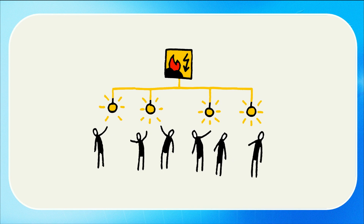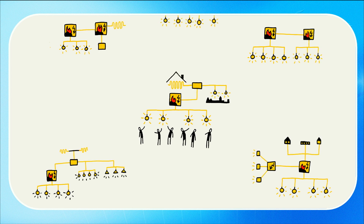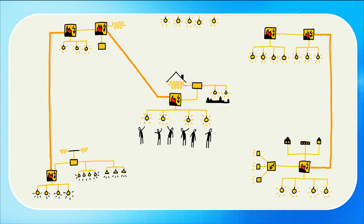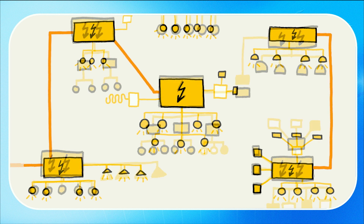Let us take the example of the electricity infrastructure. The first true electricity infrastructure came online in 1882. It consisted of a single coal-fired generator, providing power to the light bulbs of 59 customers within a New York neighborhood. Soon, similar systems sprouted in major cities around the world. Eventually, these local neighborhood systems were expanded to link entire urban areas with a diversity of electrical devices and multiple generators operating simultaneously. Gradually, these isolated urban grids were linked to provide backup power and improve stability, and were extended to connect progressively larger and more remote power generation facilities.